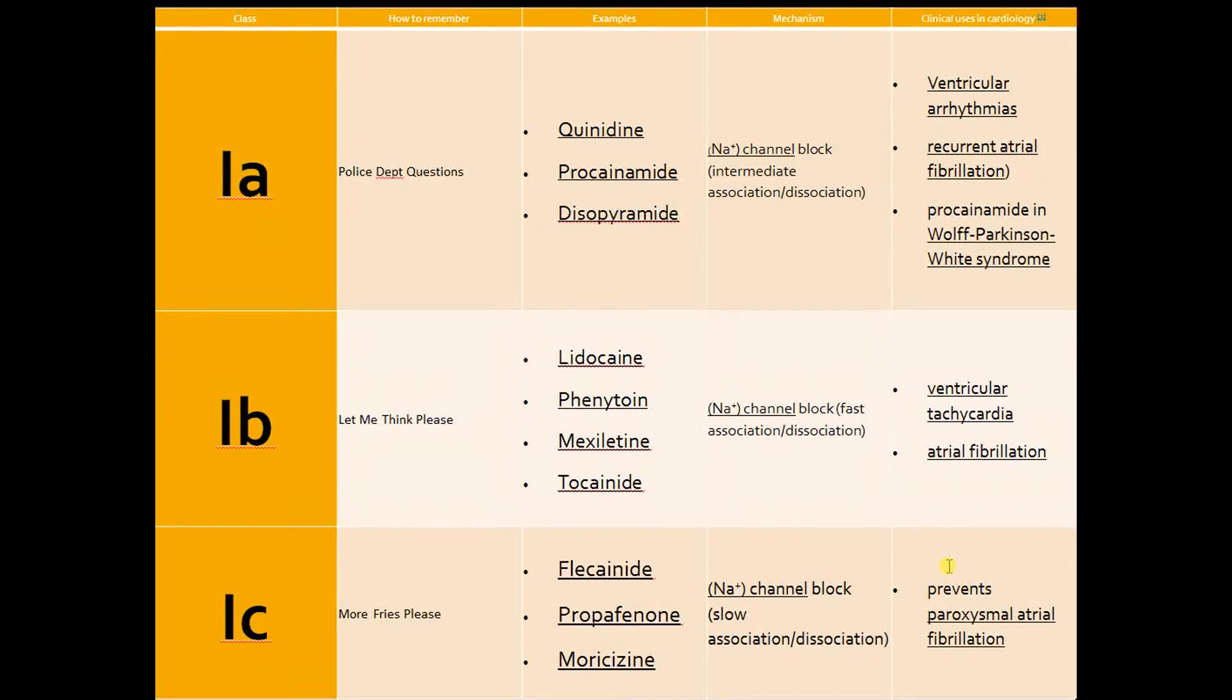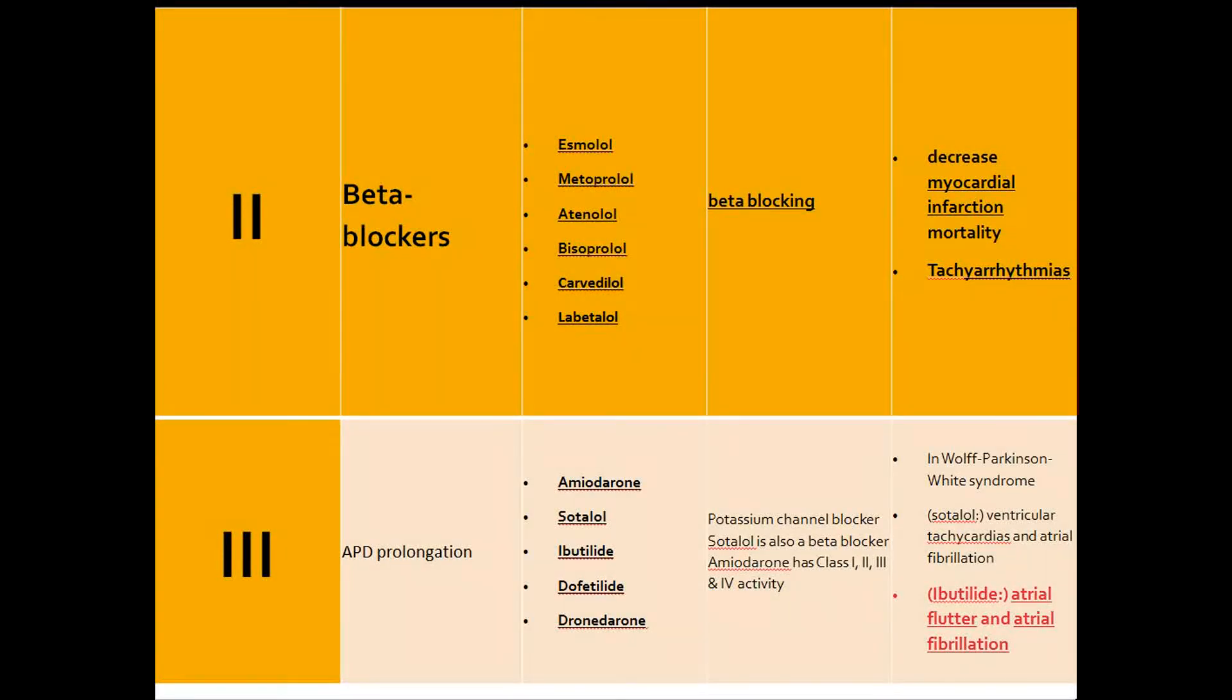Class 2 mainly includes beta blockers. The clinically significant beta blockers in this category are esmolol, metoprolol, atenolol, bisoprolol, carvedilol, and labetalol. I'm not going to use trade names because it becomes confusing and different countries have different trade names. I've kept it to generic names. Obviously they work as beta blocking agents.